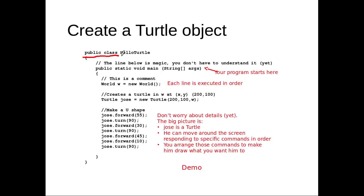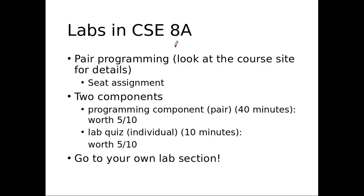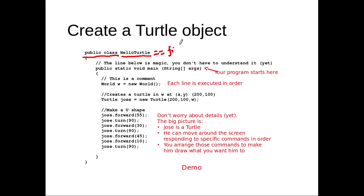So public class and this HollowTurtle is the name you pick for this class. And one thing you should know is your class name must be exactly the same as your file name. So when you save this file, it has to be named HollowTurtle.java.